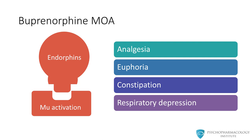In the brain, naturally produced opioids, which are called endorphins, are released in the synapse and activate the mu opioid receptors, producing a classic mu opioid response. These include things like analgesia, euphoria, constipation, and respiratory depression, as shown on the slide.